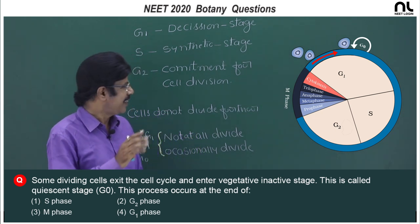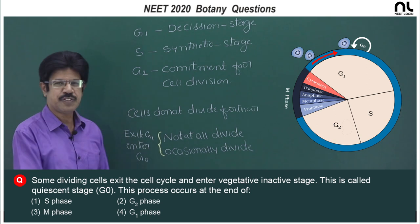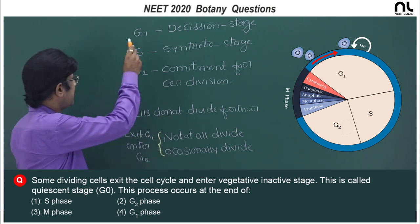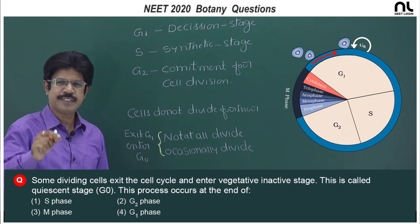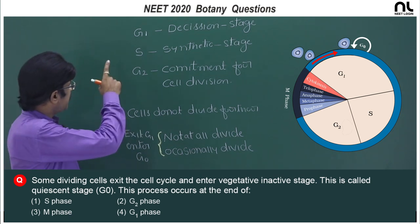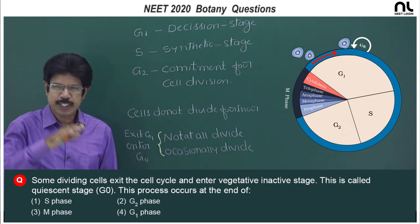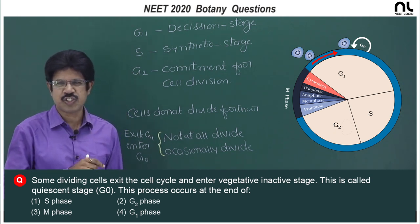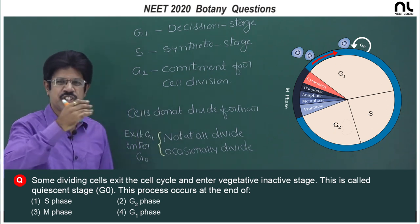In the cell cycle, there is the interphase and the division phase. In interphase: G1, S, and G2; and in the division phase it is M. G1 is the decision stage — whether the cell proceeds to S stage or exits G1 to enter G naught.